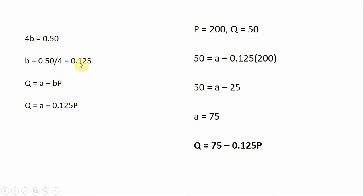That's what I have in this step here. So plugging in 0.125 for B, we have our linear demand curve. Not quite done, but we know that Q equals A minus 0.125P. Our next step is to figure out what A equals.